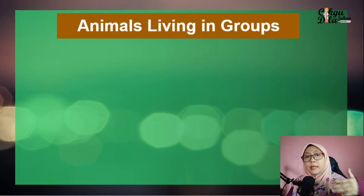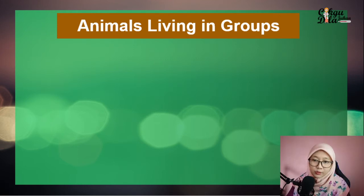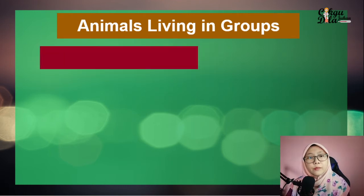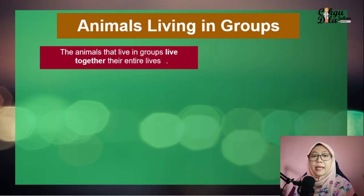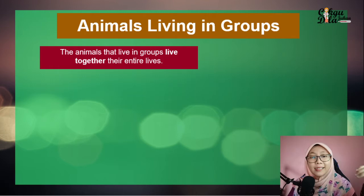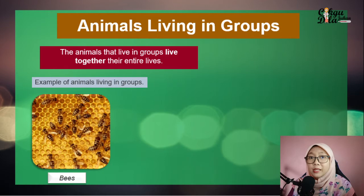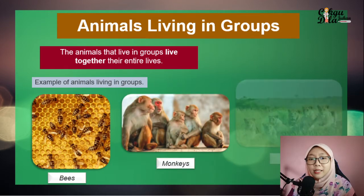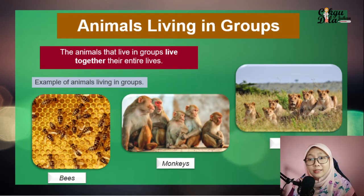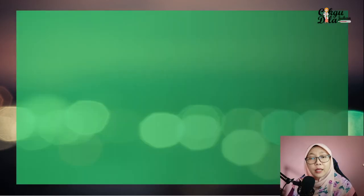We will go through the examples and the advantages and disadvantages for animals that live in a group and for animals that live in solitary. Animals that live in a group live together their entire life. Examples include bees, monkeys, and lions.